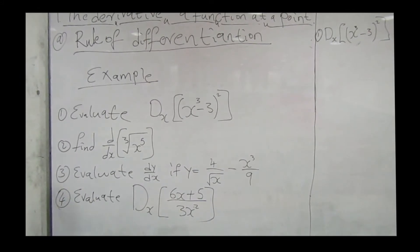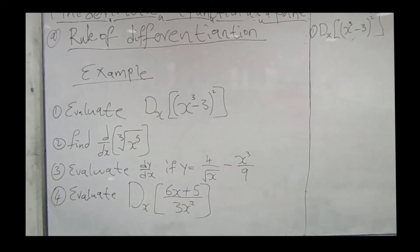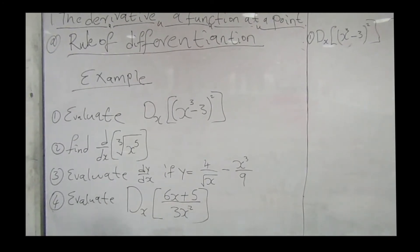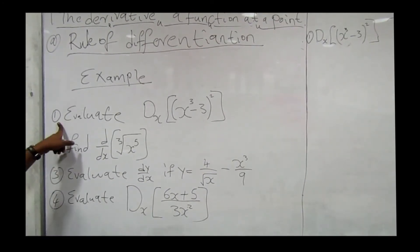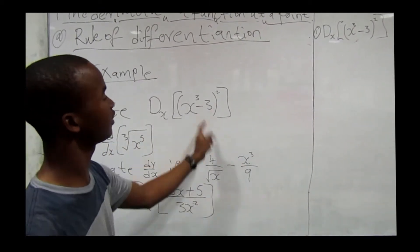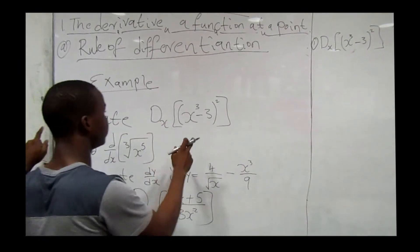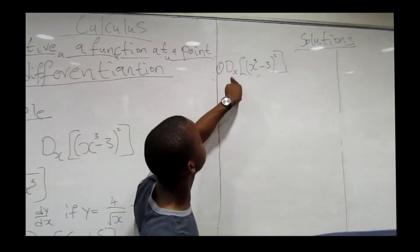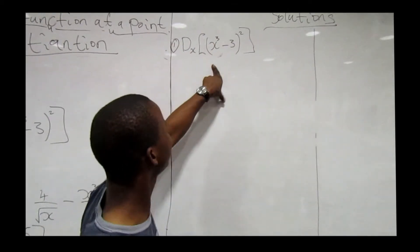Okay guys, now we are doing examples of rules of differentiation. The first example says we must evaluate d/dx of (x³ - 3) the whole square. I'm going to write the solution here: d/dx into (x³ - 3) the whole square.